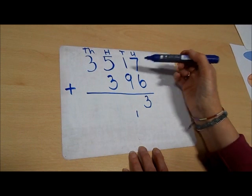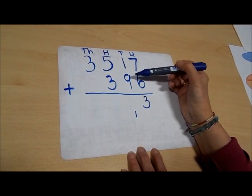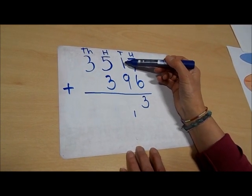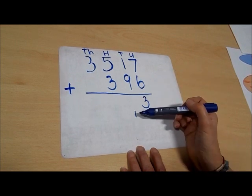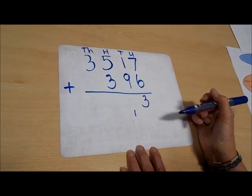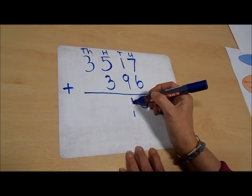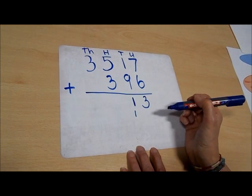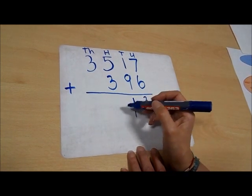Now we're going to add our tens. We have 9 and 1 which makes 10, and one more which is 11. So we're going to put this 1 in the tens column and carry the other 1 over into the hundreds column.